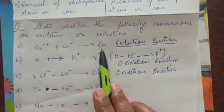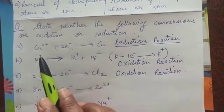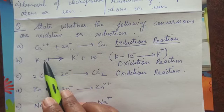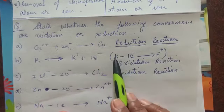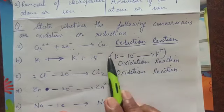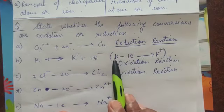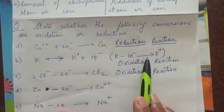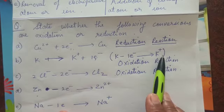You can bring this one electron on the other side of the arrow and then it will be here the electron is plus 1 electron. When you bring it on the other side, it will be minus 1 electron. So K minus 1 electron will be K⁺.